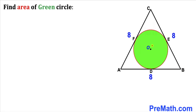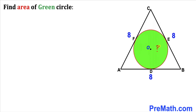In this video we have a green shaded circle inscribed in an equilateral triangle ABC, as you can see in this diagram, such that the side length of this equilateral triangle is 8 units. Moreover, points D, E, and F are our points of tangency, and now we are going to calculate the area of this green shaded circle.